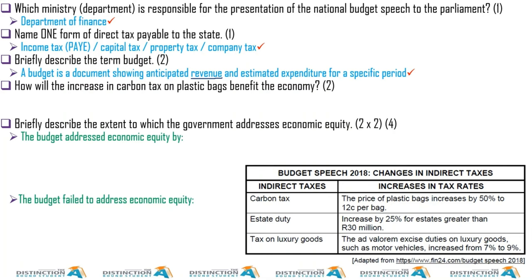When defining a budget, I want to see two terms: revenue and expenditure. Without these two, a definition is unlikely to be marked correct. A budget is a document showing anticipated revenue — it's presented in March but covers spending from 1 April — so there are elements of estimation. It also shows estimated expenditure for a specific period, in our case one full year from 1 April to 31 March — we call it a fiscal year.